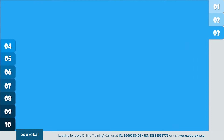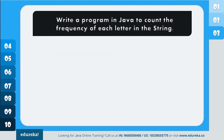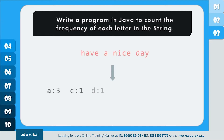Now let's see the next program. The problem statement says: write a program in Java to count the frequency of each letter in the string. You have to check the frequency of characters present in the given string. For example, for the statement 'have a nice day,' it should display that the occurrence of 'a' is 3, 'c' is 1, 'd' is 1, 'h' is 1, and so on. Let's take a look at the code to understand its working.